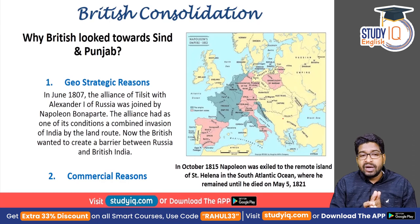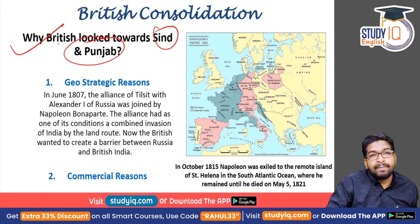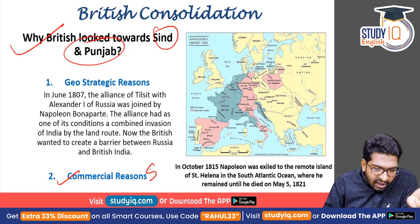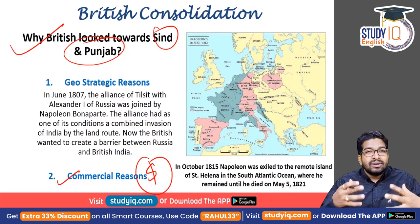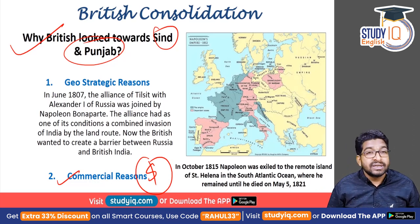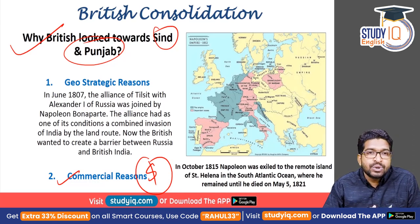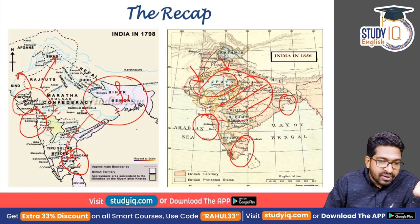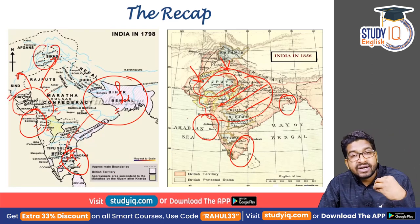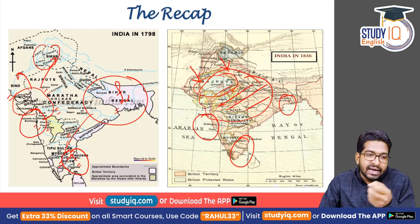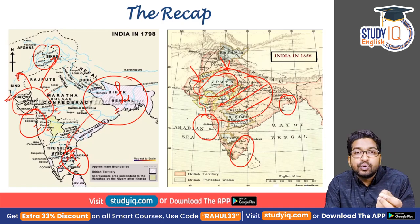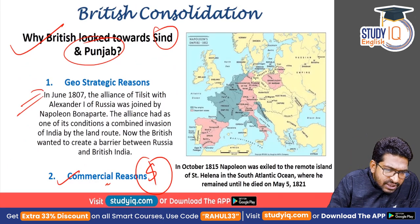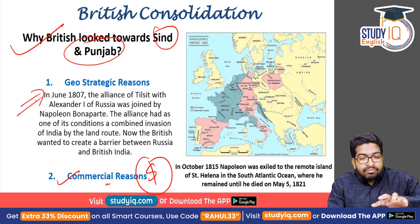Why did the British look towards Sindh and Punjab? First, commercial reasons — they were traders who wanted more territory and money. Punjab had fertile plains — the Indus plains and the Gangetic Plains — and the Sindh region was very attractive from the coastal and maritime trade perspective. But there were also geostrategic and practical reasons. The fall of the Maratha Confederacy removed the barrier between British rule and north-western India, making them immediate neighbors. Whenever there are neighbors, there are bound to be disagreements.